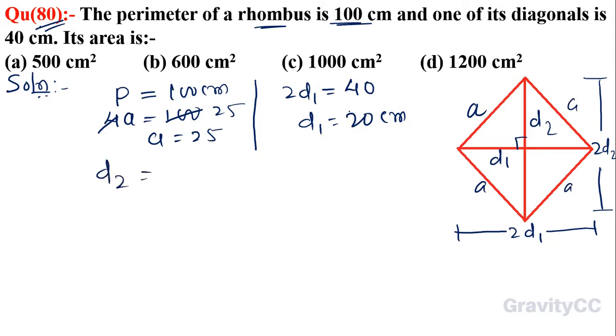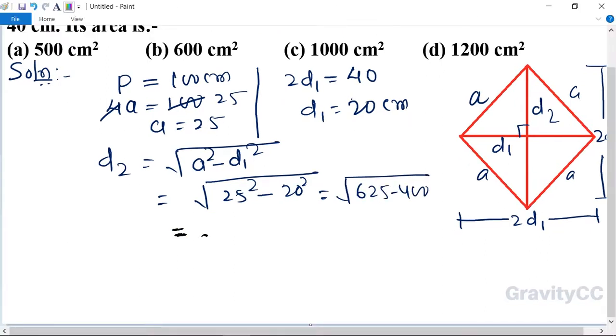So d2 equals square root of a squared minus d1 squared. a is 25, so 25 squared minus 20 squared equals 625 minus 400, which equals square root of 225, so 15 centimeters.